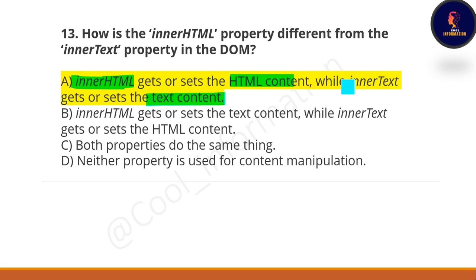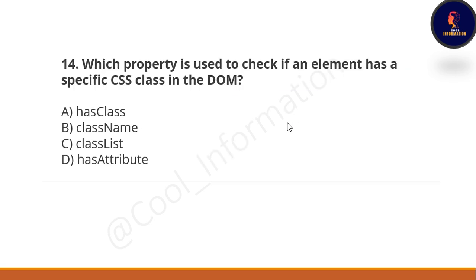Next question: Which property is used to check if an element has a specific CSS class in the DOM? Option A: hasClass. Option B: className. Option C: classList. Option D: hasAttribute. The correct option is C — classList is used to check if an element has a specific CSS class in the DOM.